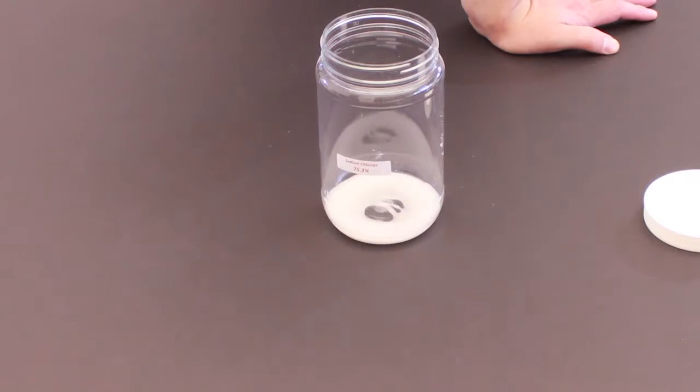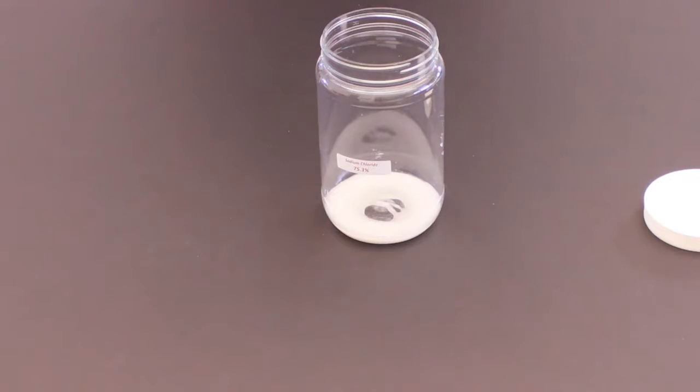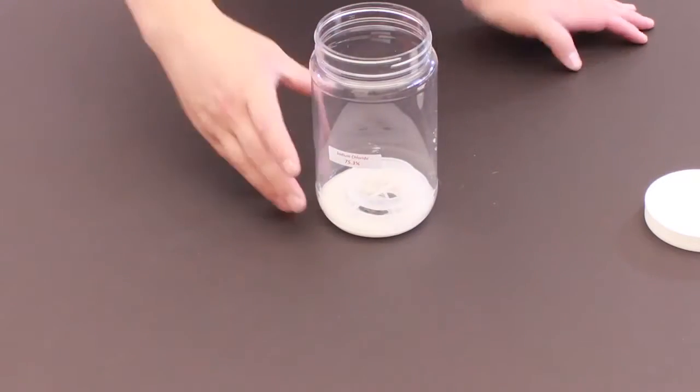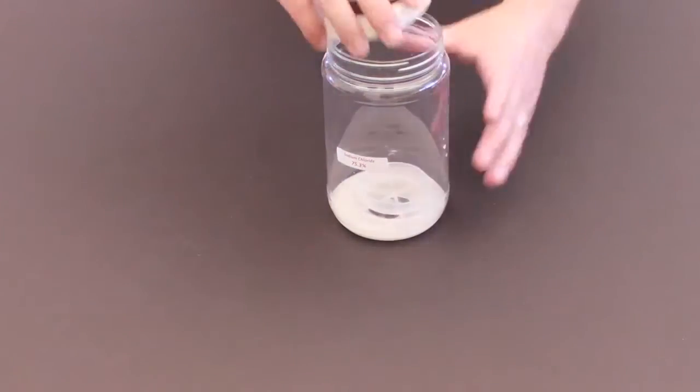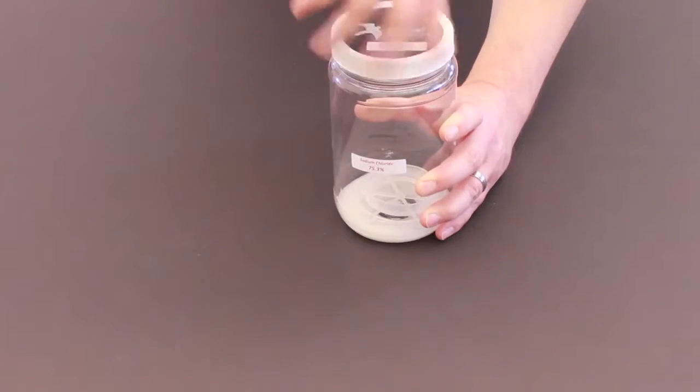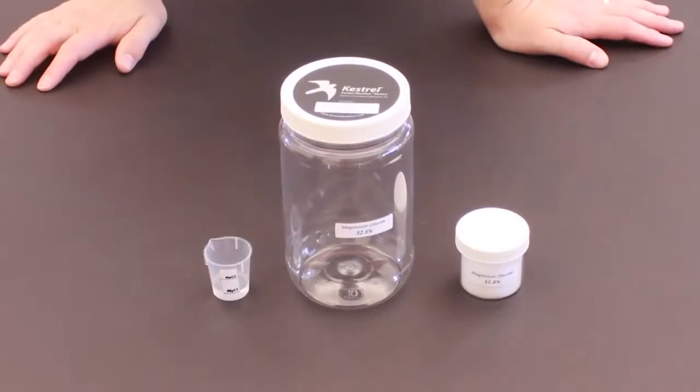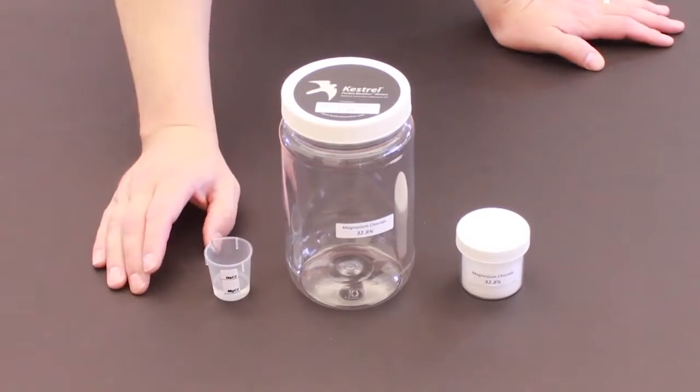Next, we're going to put this spacer grid into the container with the prongs at the bottom, so it sits up in the middle, and then we're going to close this jar tightly. Next, we'll move on to the magnesium chloride chamber.